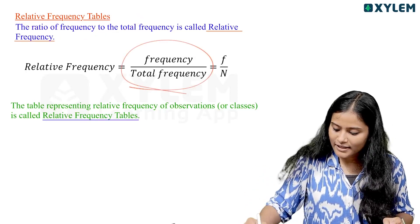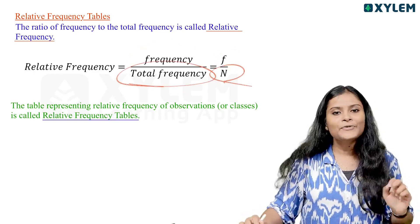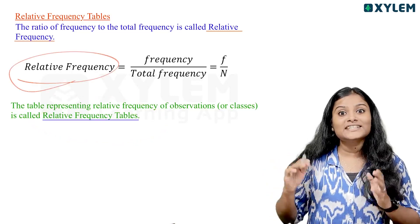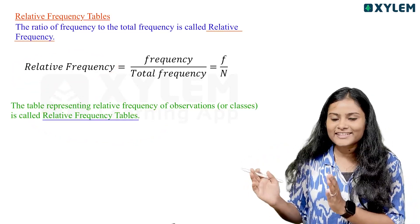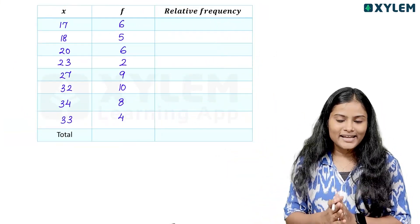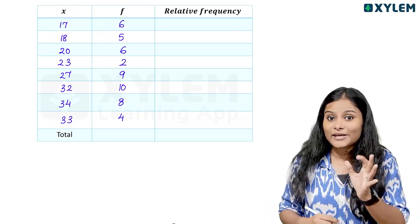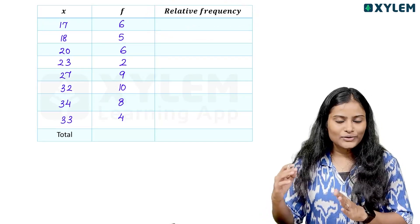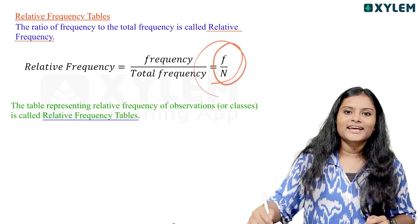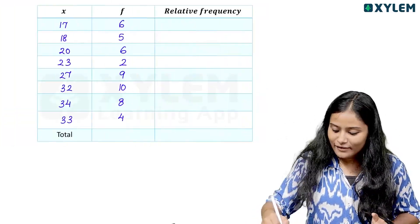We have an equation called frequency divided by total frequency. What is the capital N? That is the total frequency. We have x and f values, and we have a frequency column. This is the relative frequency. We construct three columns. The relative frequency is given by frequency divided by total frequency.